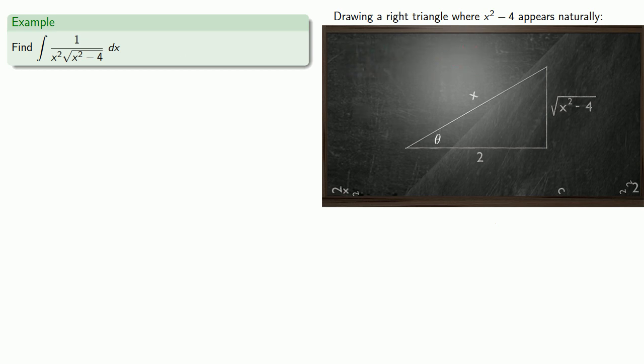We need our angle. Since the problematic part of this integral is the square root of x squared minus 4, we should look to a trigonometric function that incorporates it. That's either going to be sine or tangent. However, tangent, because it's opposite over adjacent, will give us the easier expression, so we'll start with that.